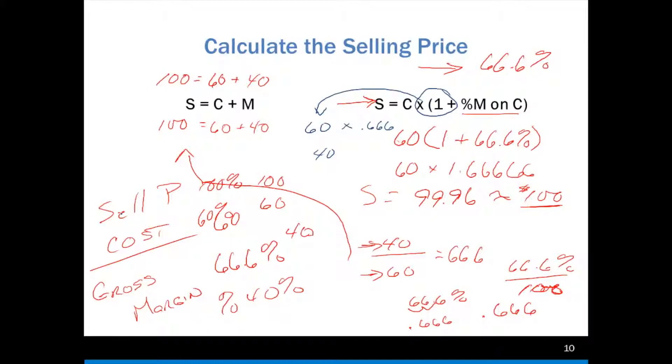If I have a cost of $60, and I want to mark it up 66%, you can't just multiply by 0.666. You want to multiply it by 1 plus the 0.666. This 1 represents the $60. If I take 60 times 0.666, then I'm going to get my markup of $40. That isn't right. That isn't my sales price. We know my sales price is 60 plus 40 to get 100.